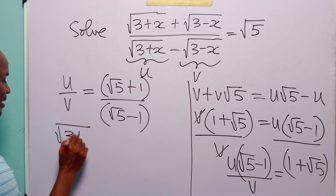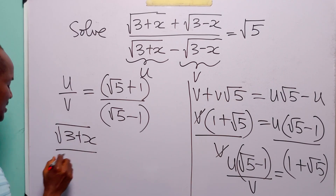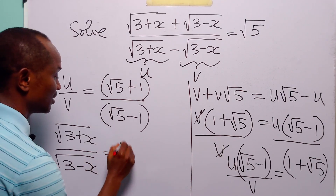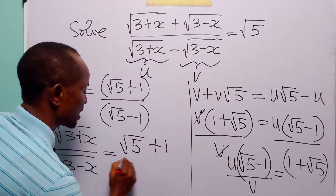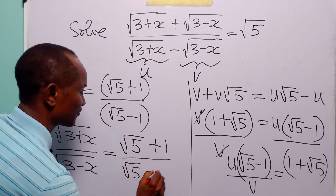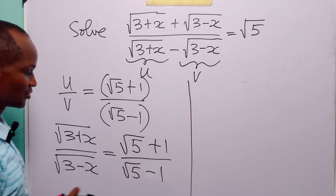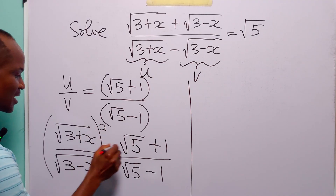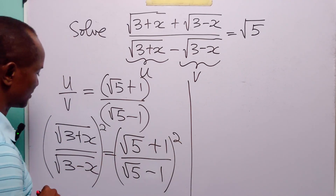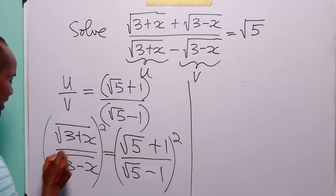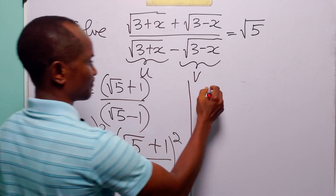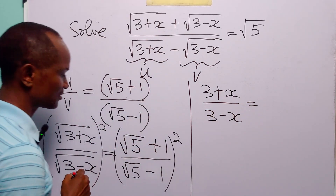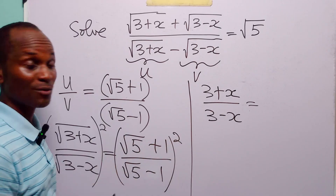Remember that u is equal to the square root of 3 plus x and v is equal to the square root of 3 minus x, so we have the square root of (3 plus x) over the square root of (3 minus x) equals (root 5 plus 1) over (root 5 minus 1). The next thing we are going to do is square both sides of this equation. Squaring takes care of the two square roots, leaving us with (3 plus x) over (3 minus x), equal to — and root 5 squared is 5.